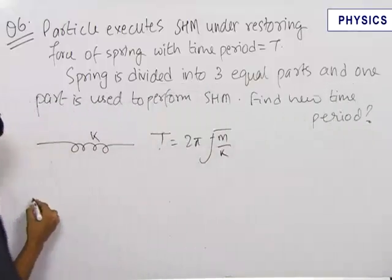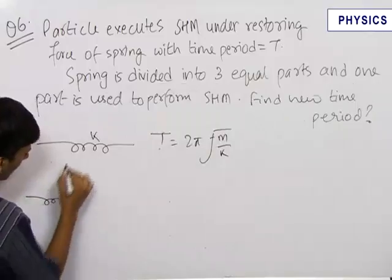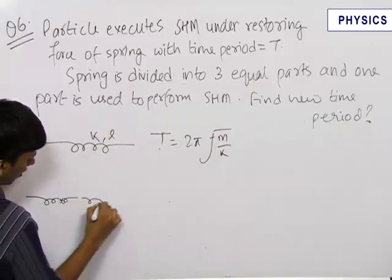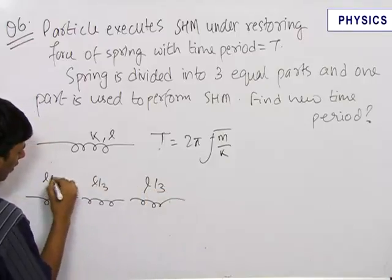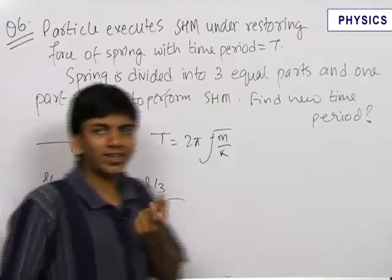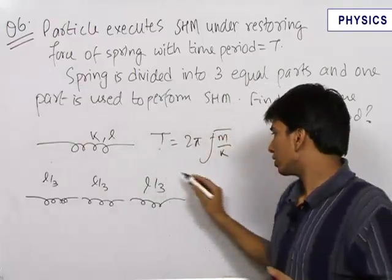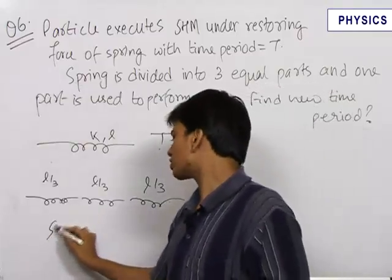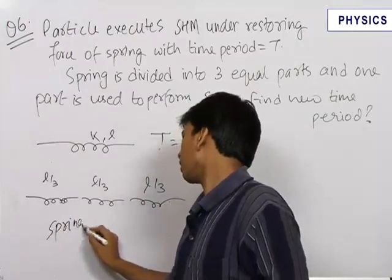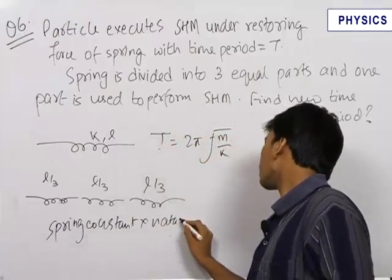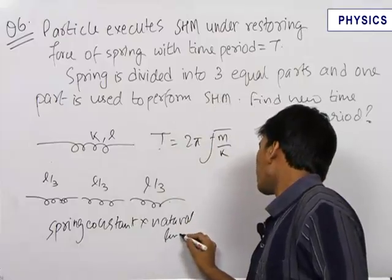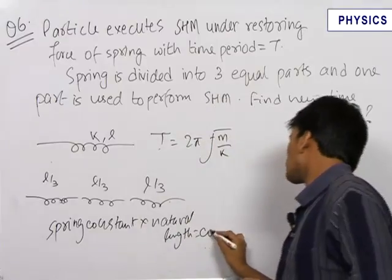Now, when the spring is cut into three equal parts, let the length of the spring be l, so each part has length l/3. We know that for a particular material of the spring, the product of spring constant into natural length is equal to a constant.